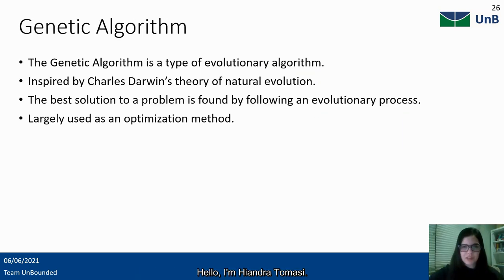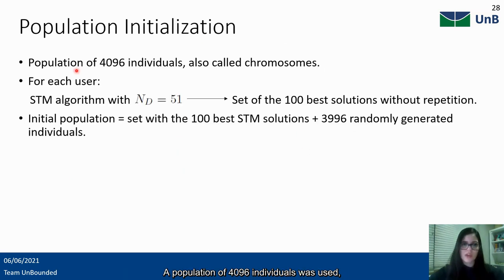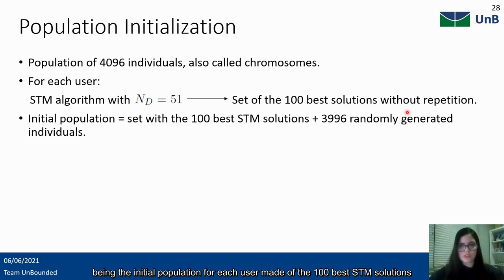Hello, I'm Yandra Tomasi. I'm going to talk about our second optimization method, the genetic algorithm. In summary, the implemented genetic algorithm has a fixed workflow. A population of 4096 individuals was used, being the initial population for each user made of the 100 best STM solutions and by randomly generated individuals.